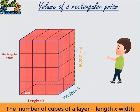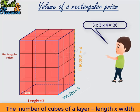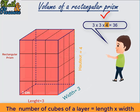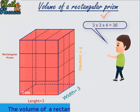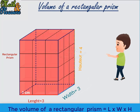That's it. So how many centimeter cubes did you use? Excellent, three times three times four. So the volume of a rectangular prism is equal to length times width times height.